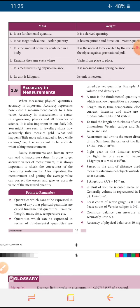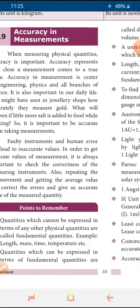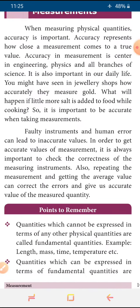Our last topic is accuracy in measurement. What does accuracy mean? Accuracy means: if we are calculating any value, and that calculated value is different from the real value, there is no accuracy. Accuracy means the real value should be almost equal to the calculated value. If these two are the same, we can say there is accuracy. So measuring accuracy is more important in our daily life.